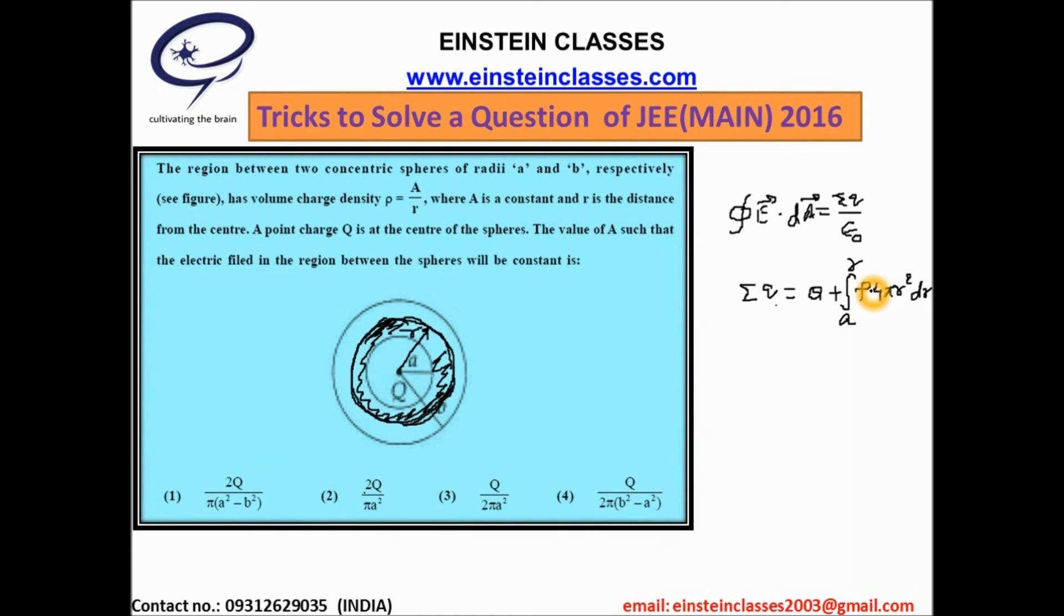Hence we have to place the value of rho and this rho will be equal to a divided by r. And as we have assumed that the value of capital A is 2Q by pi a square, hence it will come out 2Q divided by pi a square into r.